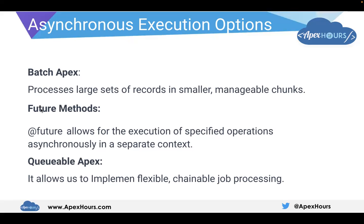We also have Future methods, which allow for the execution of specified operations asynchronously in a separate context — meaning running in the background. Then we have Queueable Apex, which allows us to implement flexible and chainable job processing. Chainable means: first complete step 1, then step 2, then step 3 — you cannot jump directly to step 3.